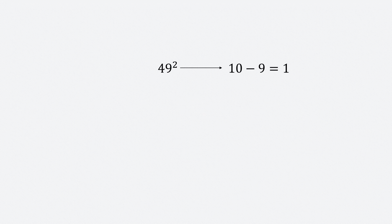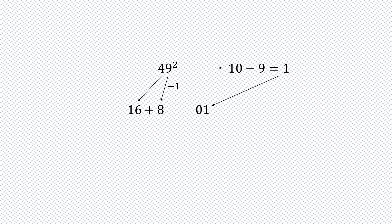Let's take a final example — 49 squared. Subtract 9 from 10, you get 1. 1 squared is 1, so write 01. Square 4, you get 16. Subtract 1 from 9 — that's 8. Add 8 to 16. So the last two digits are 01, and 16 plus 8 is 24. So, 49 squared is 2401.